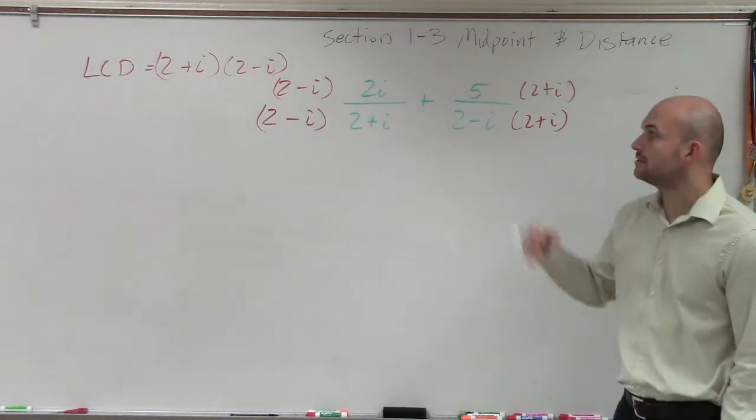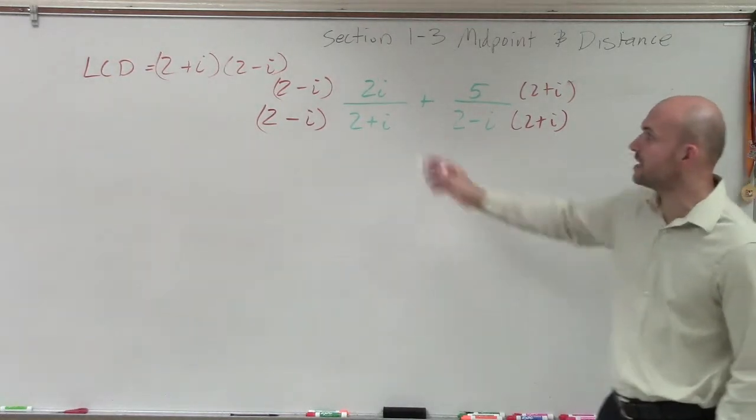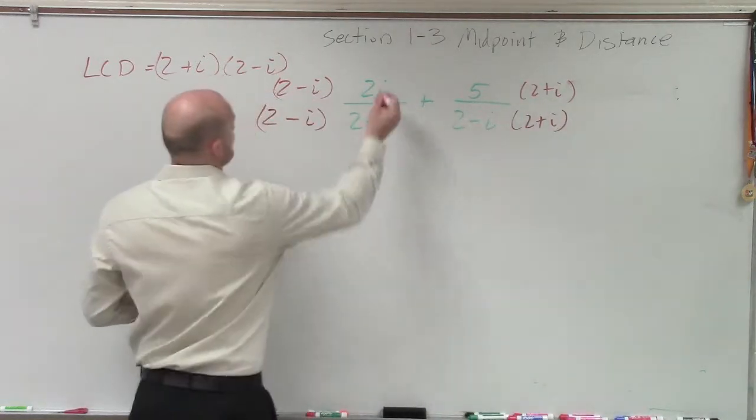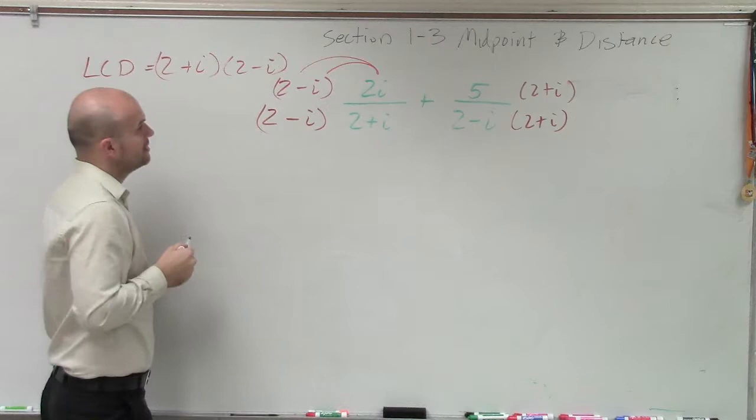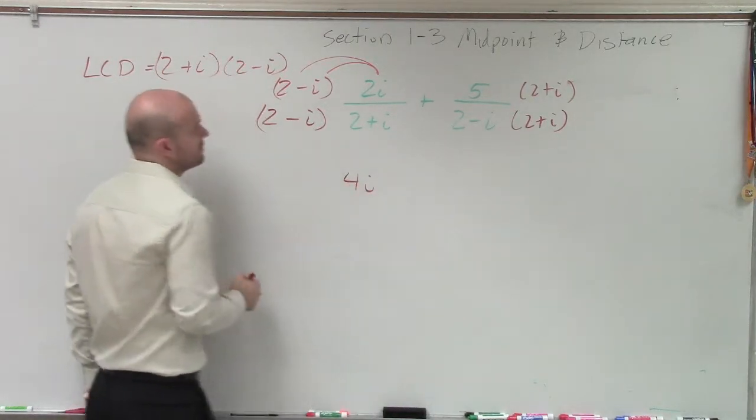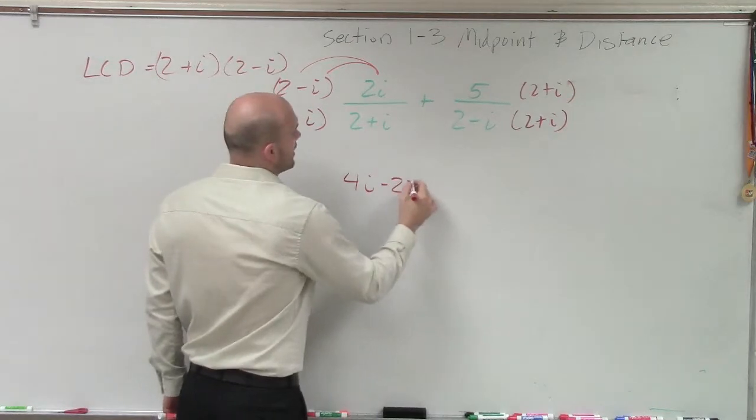All right? So now, we can multiply it as you cross. Now, up top, we want to apply the distributive property. So therefore, by doing that, I get 4i minus 2i².